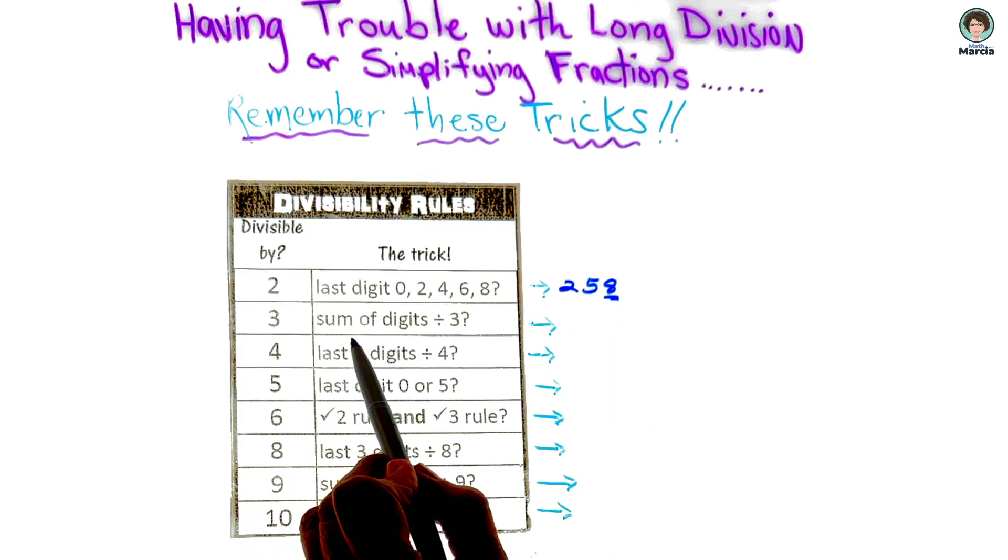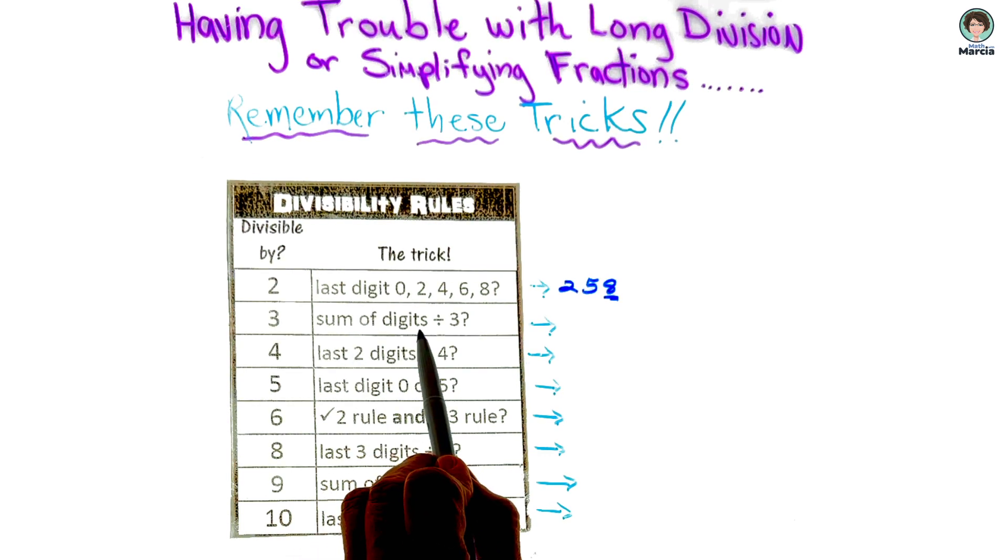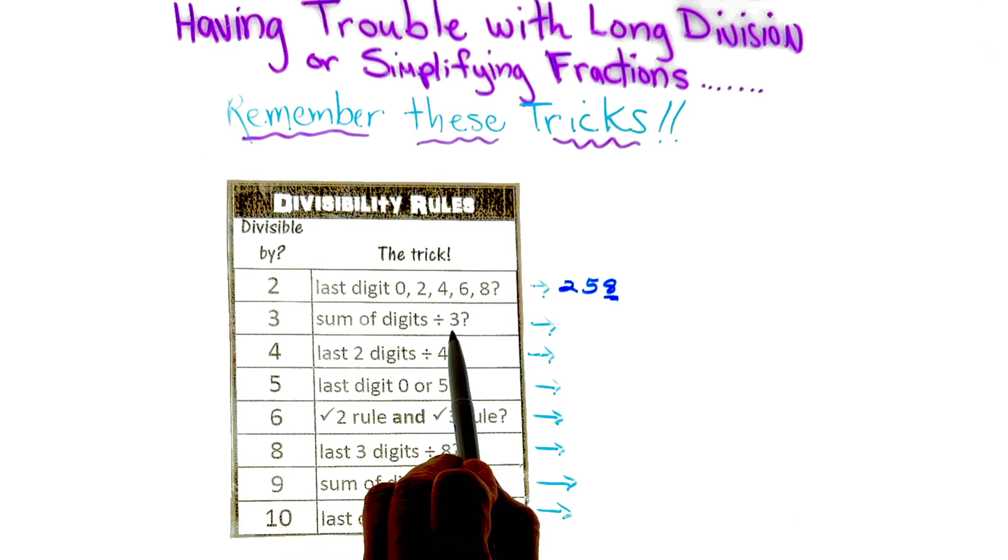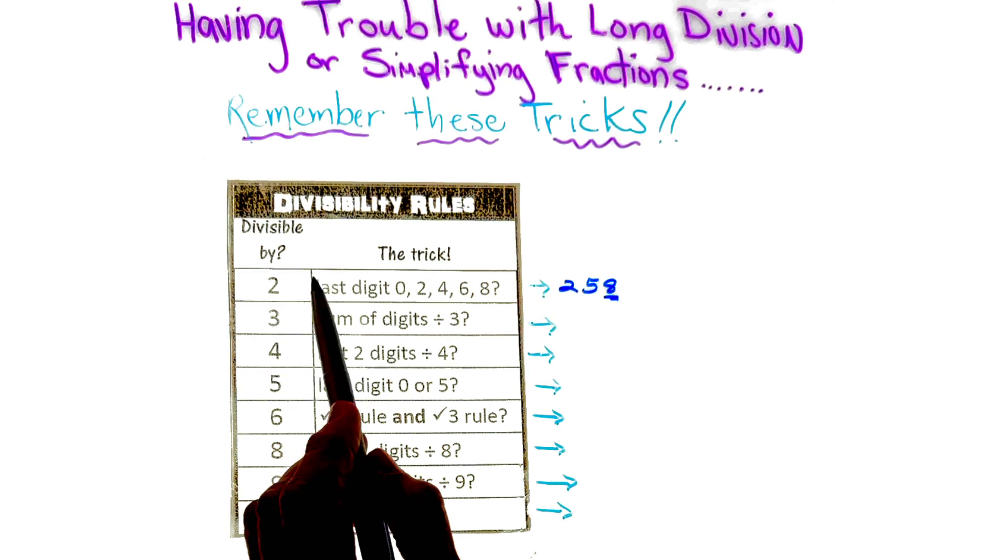If we have a number that the sum of the digits can be divided by 3, that means we can divide the whole number by 3.